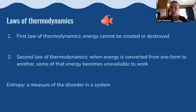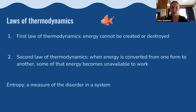The first law of thermodynamics is that energy cannot be created or destroyed. The second law is that when energy is converted from one form to another, some of that energy becomes unavailable to do work. Entropy is a measure of the disorder in a system and links to the second law, explaining that energy transformations are not 100% efficient — entropy determines how efficient a reaction is.